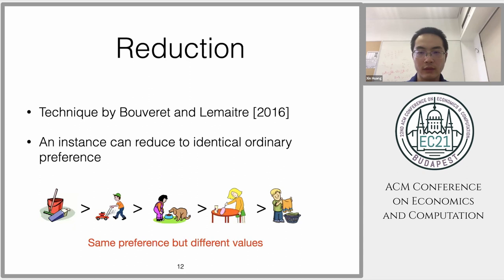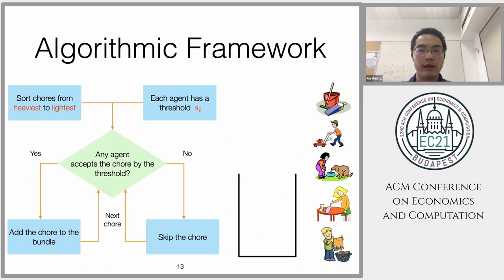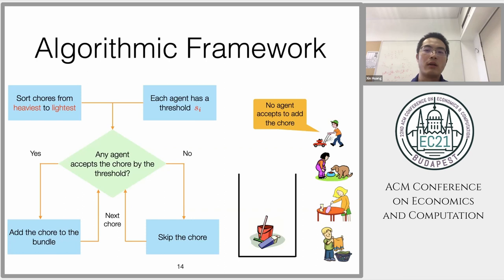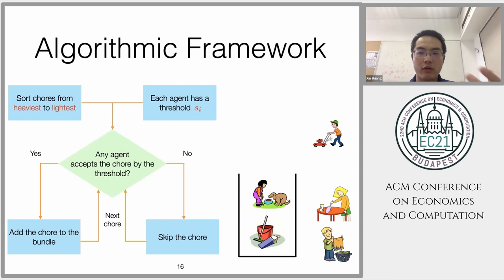Here is our framework. We sort all chores from hardest to easiest, and each agent will have a threshold. We query the hardest chore—if anyone will accept this chore, meaning if we add this chore into the bundle it will not exceed their threshold, then we put it into the bundle. We ask the second one; if no one can accept this chore, then we skip. We ask the third; if someone accepts, then we put it into the bundle. We go over this process for all the chores from hardest to the easiest, then we give it to one who can accept this bundle.